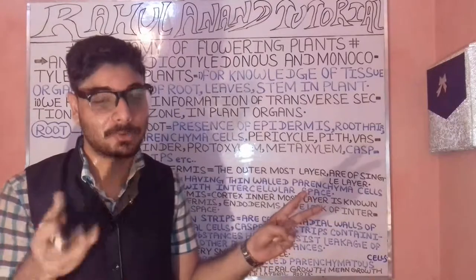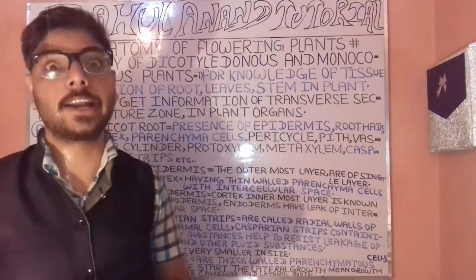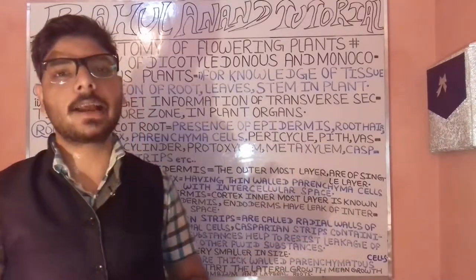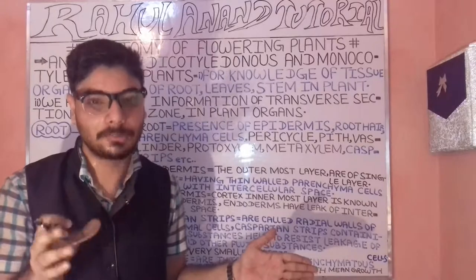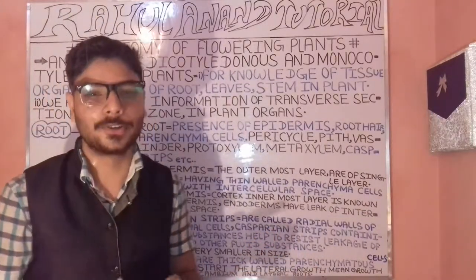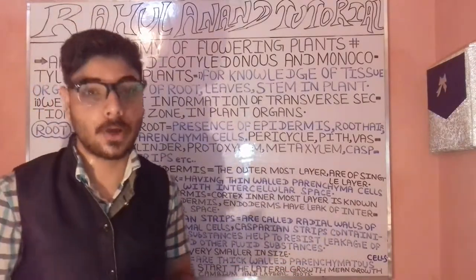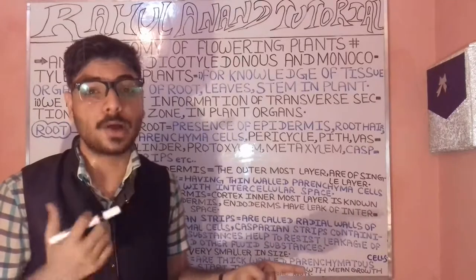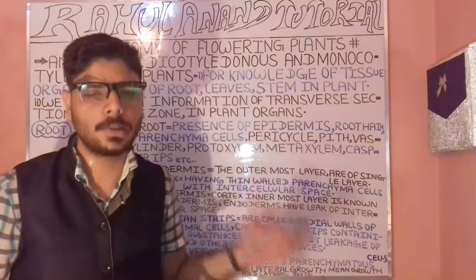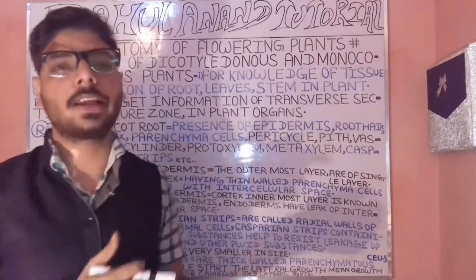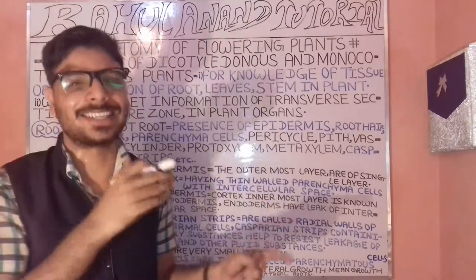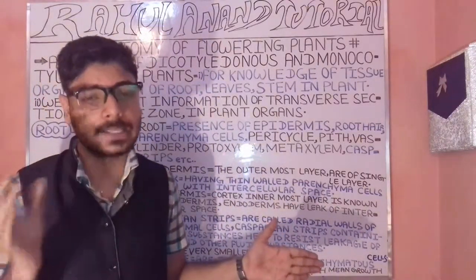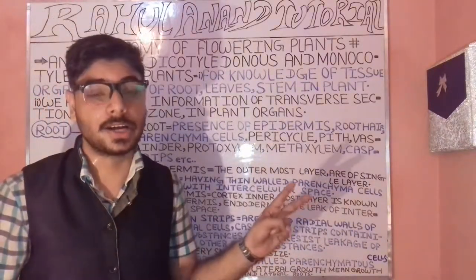Xylem is broadly divided into three broad categories: tracheids, vessels, and xylem parenchyma. Tracheids are particularly composed of dead cells, playing an important role to transport water and minerals. Minerals are components that play an important role in promoting life-supporting mechanisms — keeping the living cells healthy. Examples include nitrogen, phosphorus, molybdenum, calcium, and sulfur.